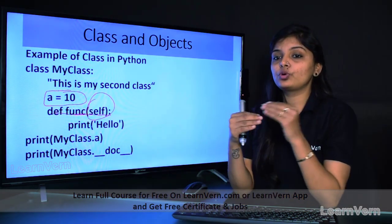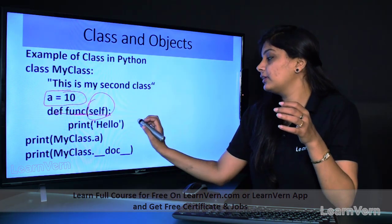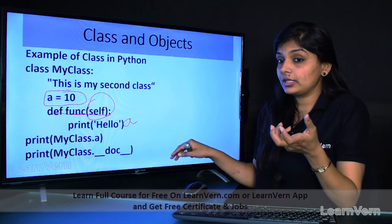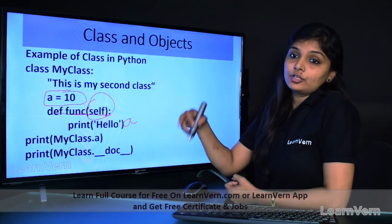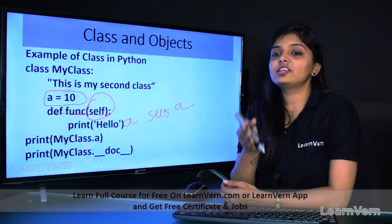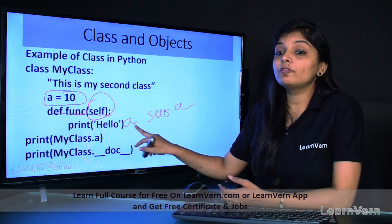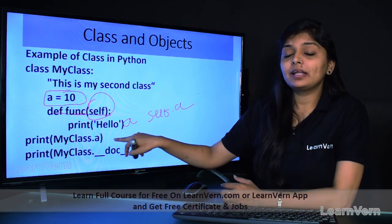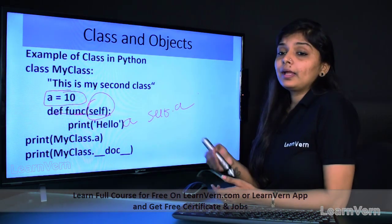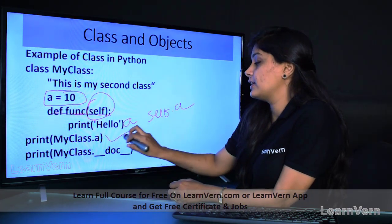'self' means that it refers to the current object — whatever object is currently working, it gives that object's values. For example, there is a variable 'a' inside my class and inside my function. To access the class variable 'a', I write 'self.a'. In Java, a similar keyword exists. If I print 'a' directly inside the method, it will print the local variable, but if I want to print the class variable 'a', I write 'self.a'. To access class variables from outside, I write 'myclass.a'. To print documentation, I write 'myclass.__doc__'.